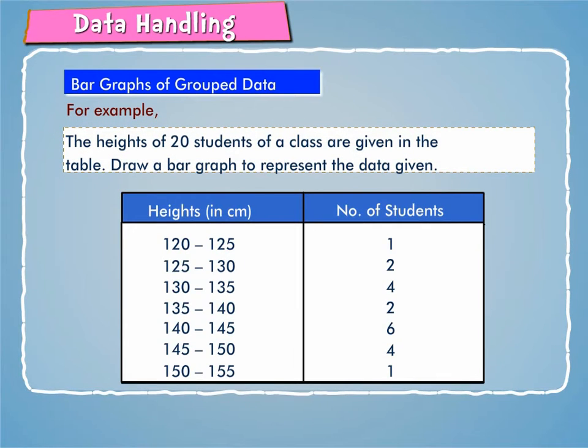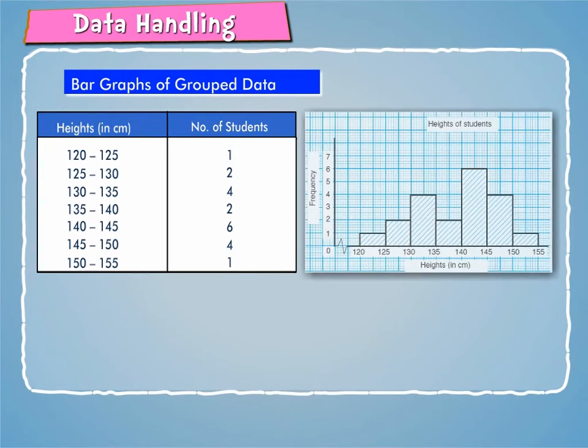For example, the heights of 20 students of a class are given in the table shown on screen. For this, take along horizontal axis the heights and along vertical axis the frequencies.